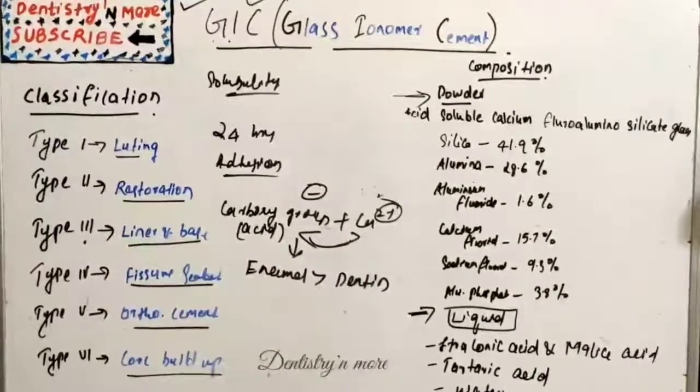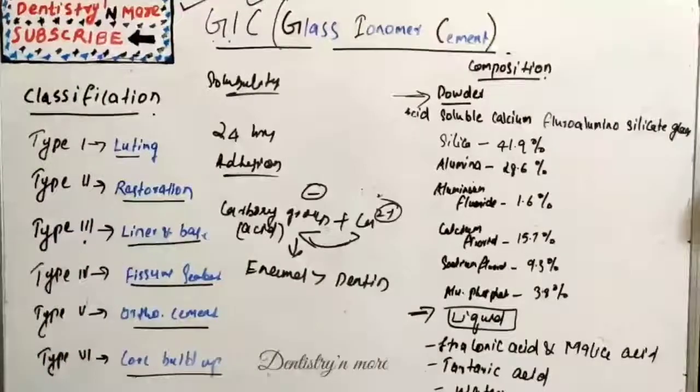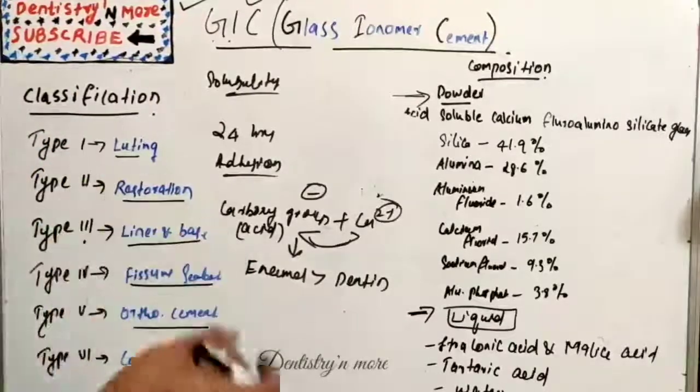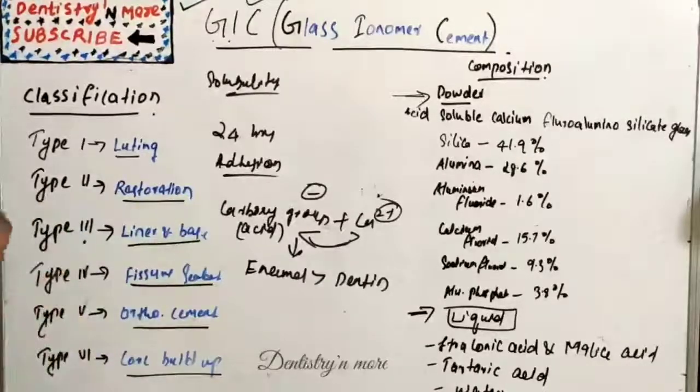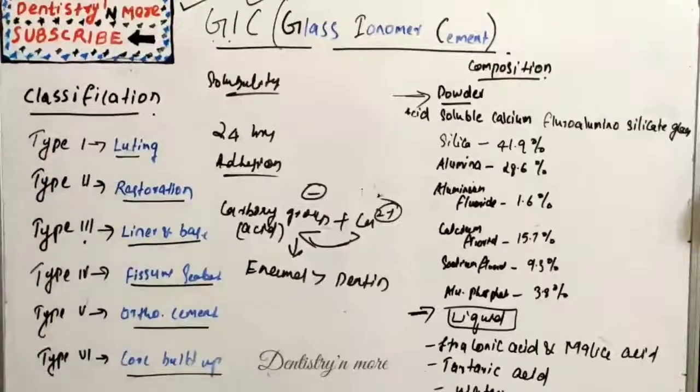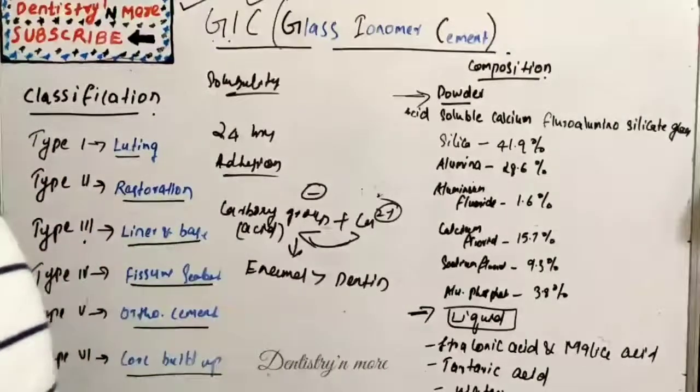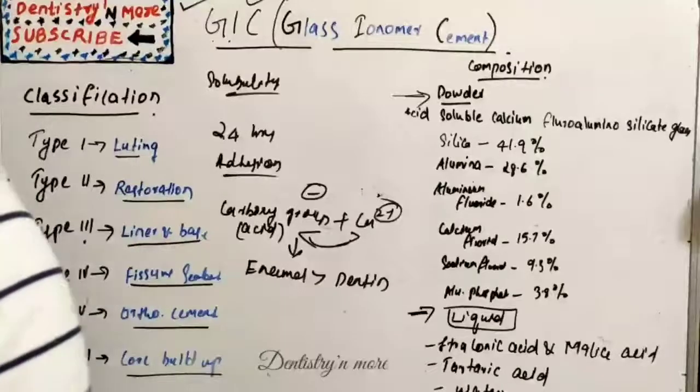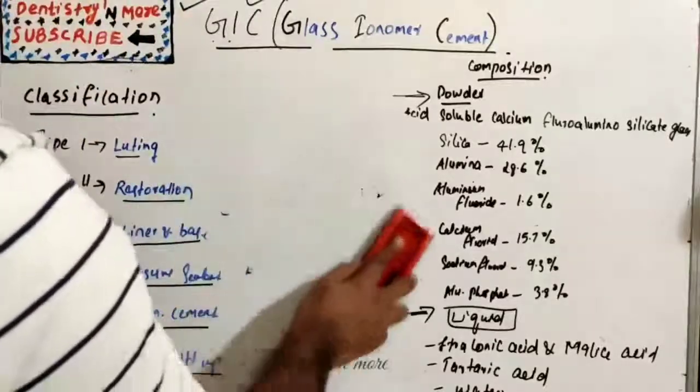Regarding aesthetics: GIC is a tooth-colored material and available in different shades, but it is definitely inferior to composites. Composite has got excellent finish. GIC lacks that translucency, so it cannot be that much recommended to the anterior teeth, and it has got a rough surface and there is potential for discoloration and staining.